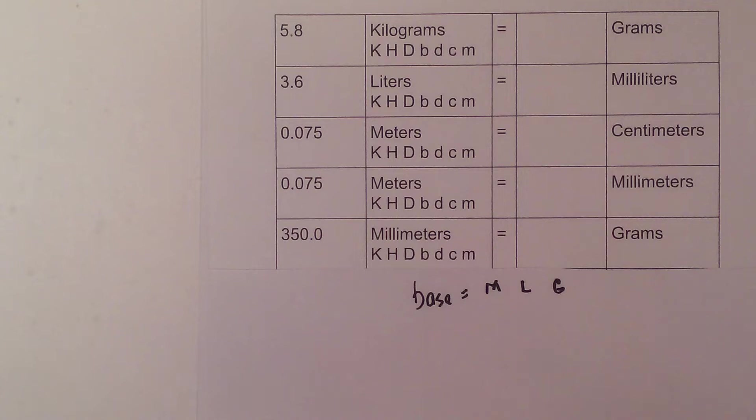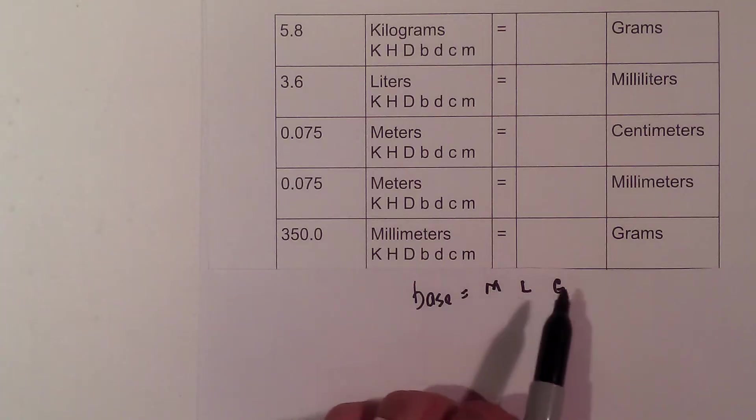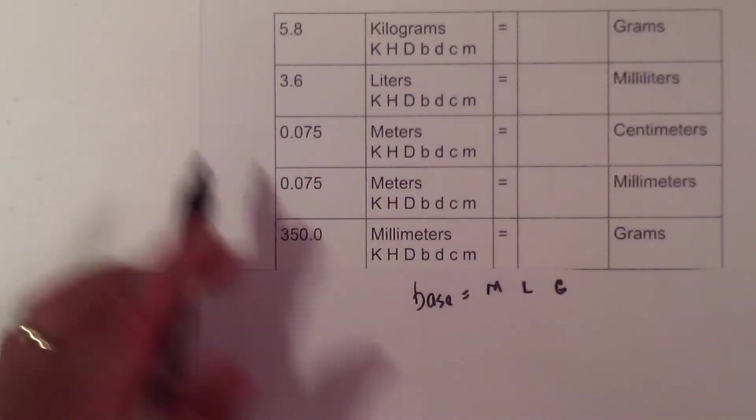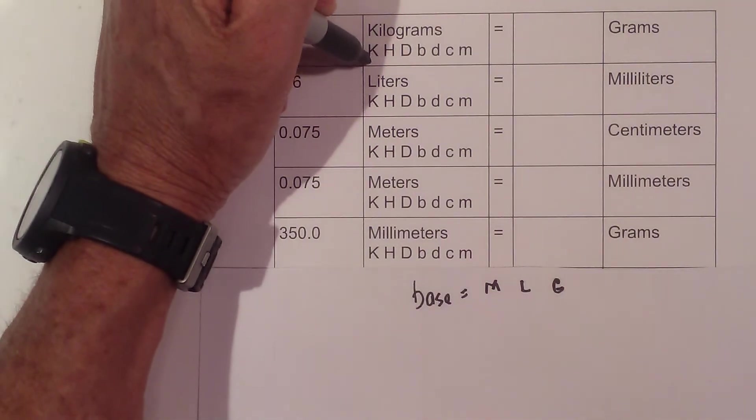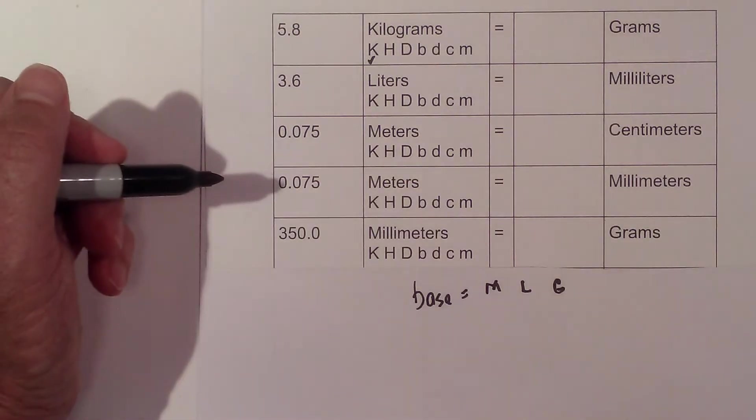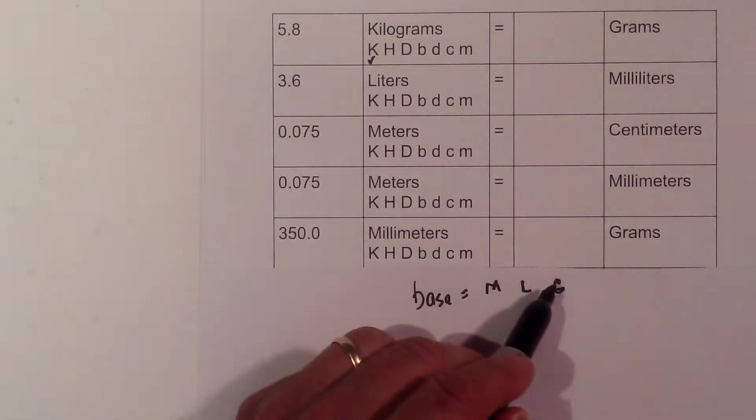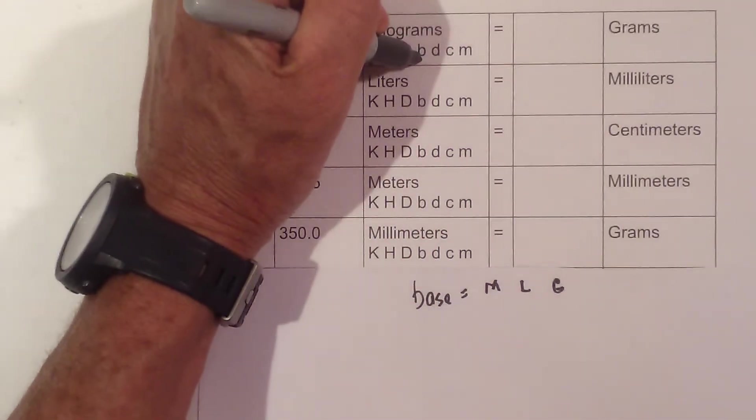Now remember, they are not the official SI units, but they're acceptable base units: meters, liters, and grams. Let's get started. 5.8 kilograms equals how many grams? I always put a check where I'm starting and then an X where I'm going. I'm going to grams, which is a base, so I put an X mark there.